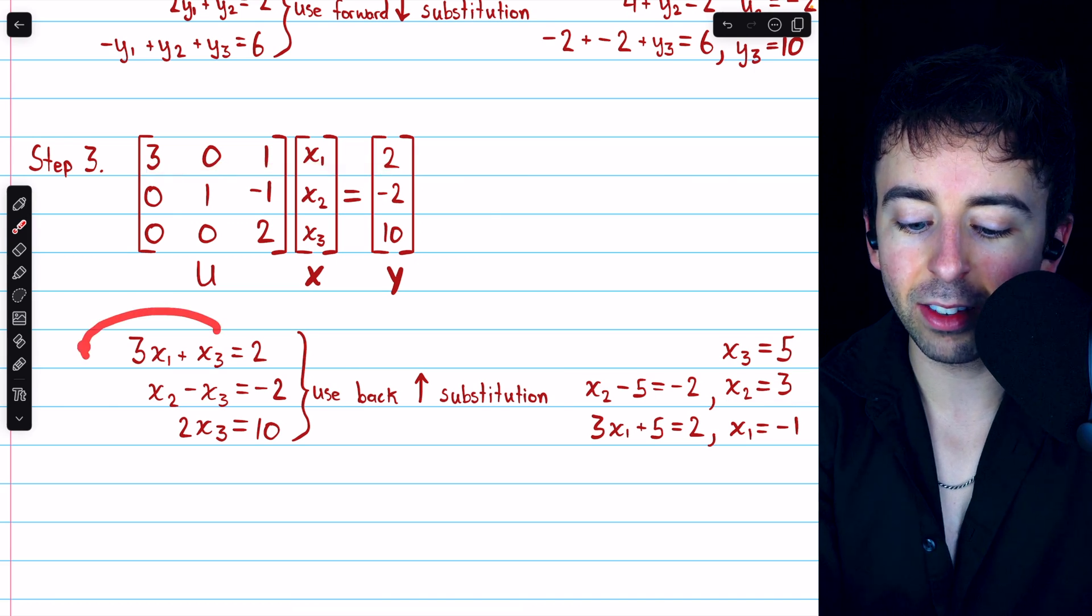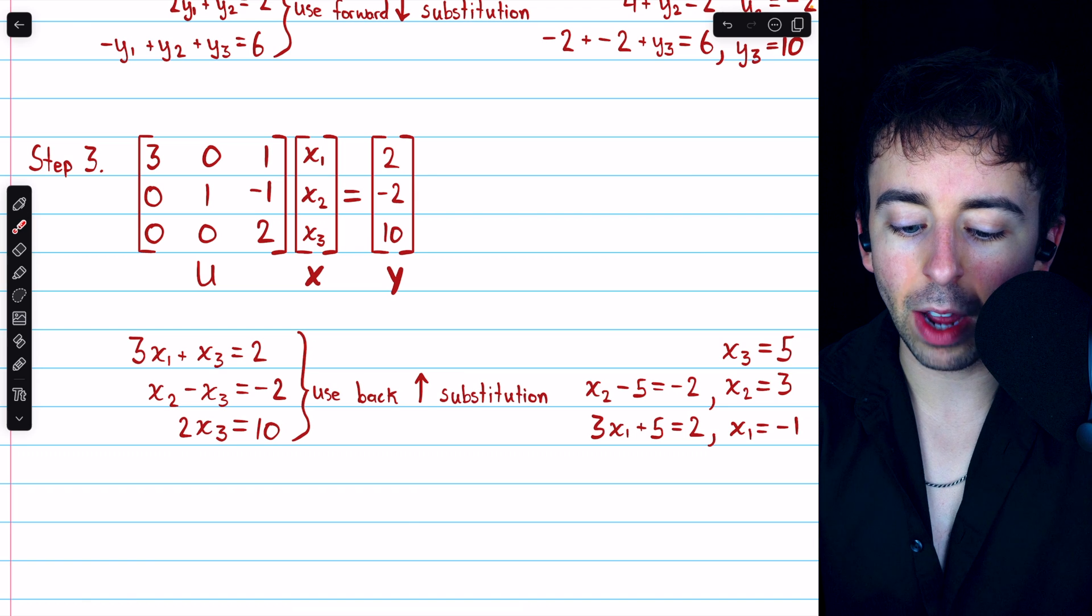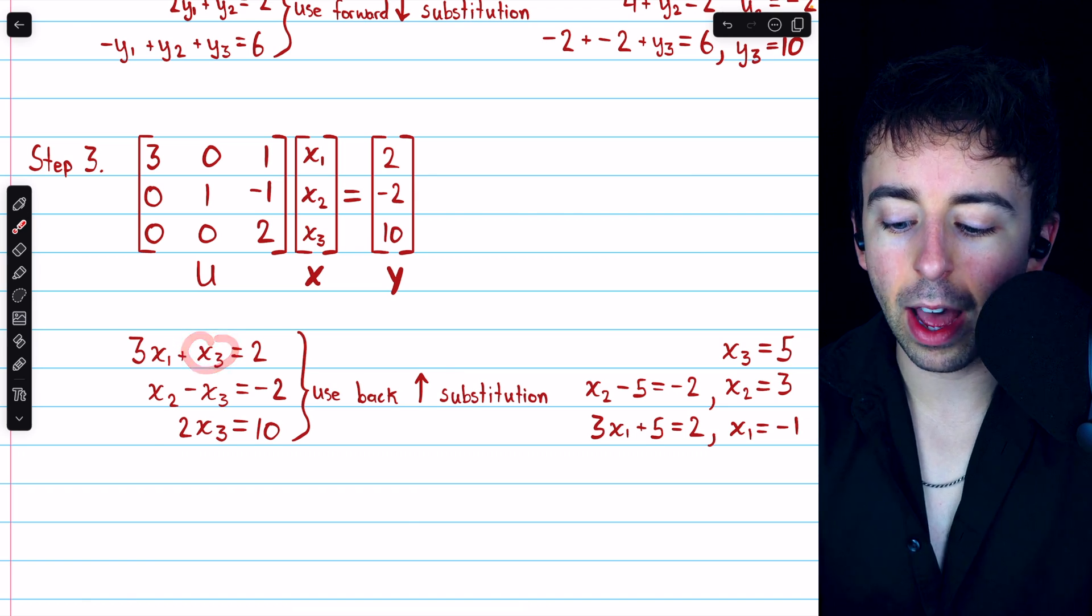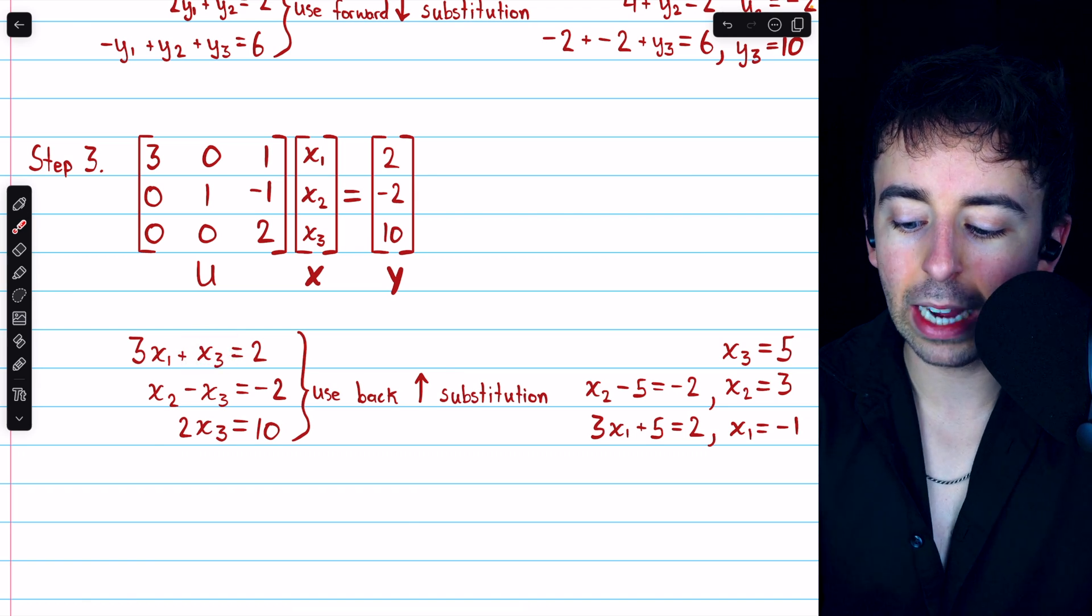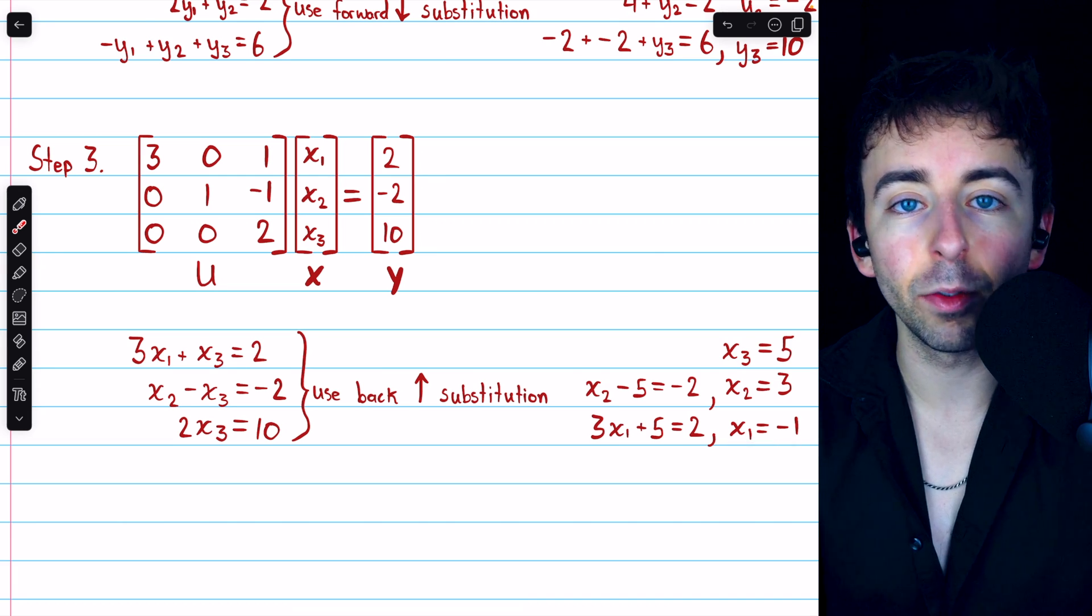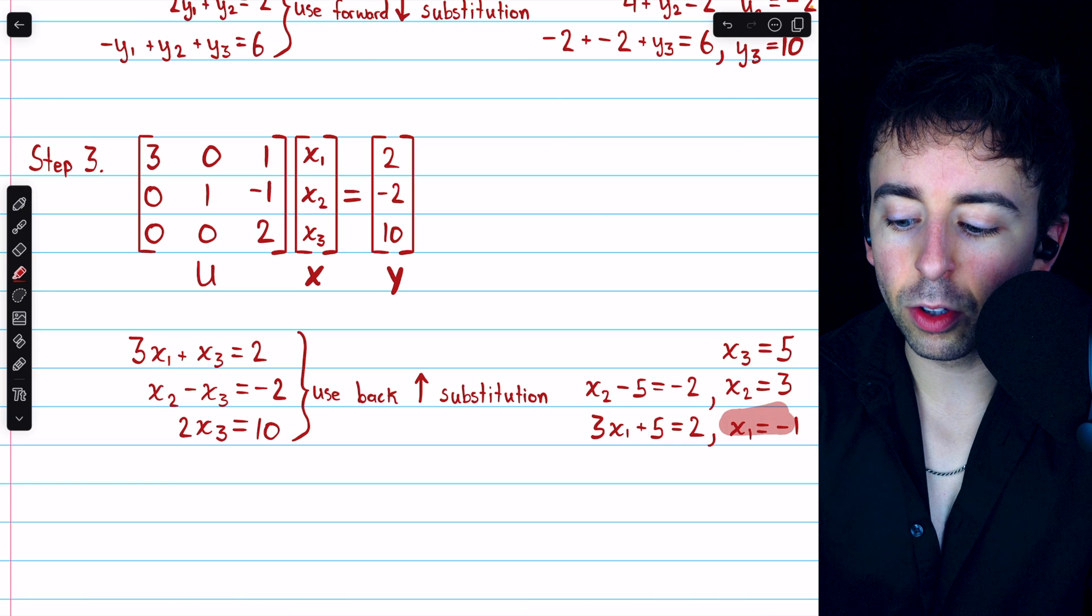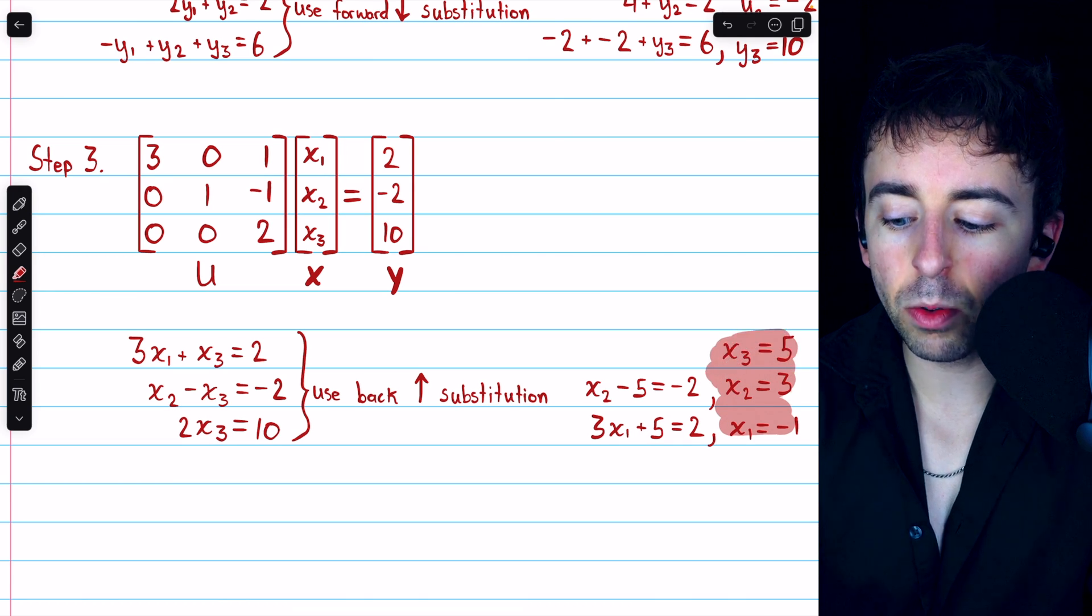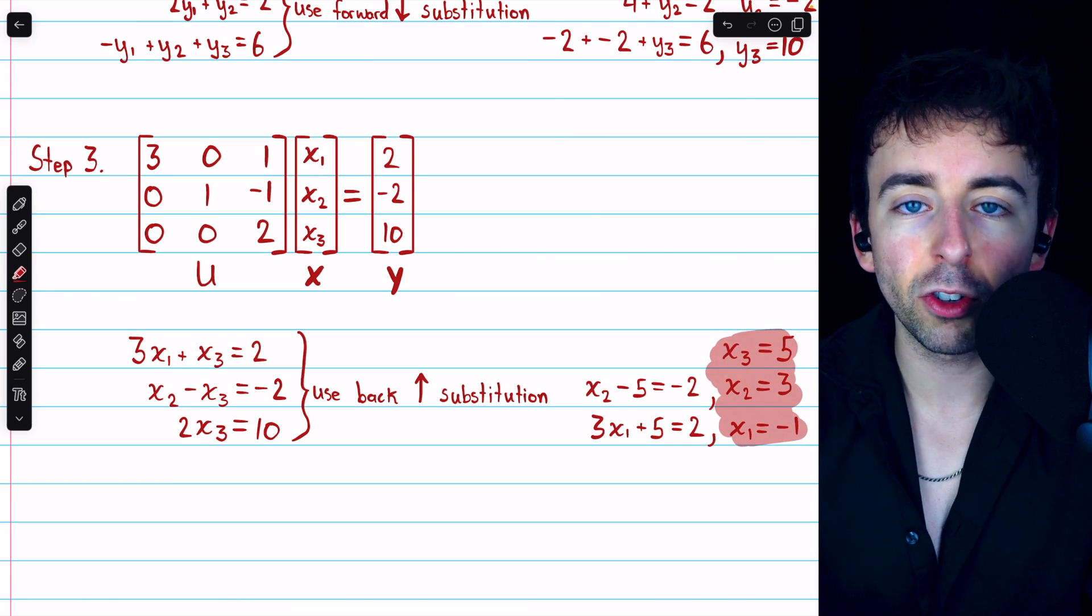Then, row 1 gives us this equation, and we just found out that X3 is 5, and so we have that 3X1 plus 5 equals 2, hence X1 is equal to negative 1. And thus, we have the solution to the original system using the LU decomposition method.